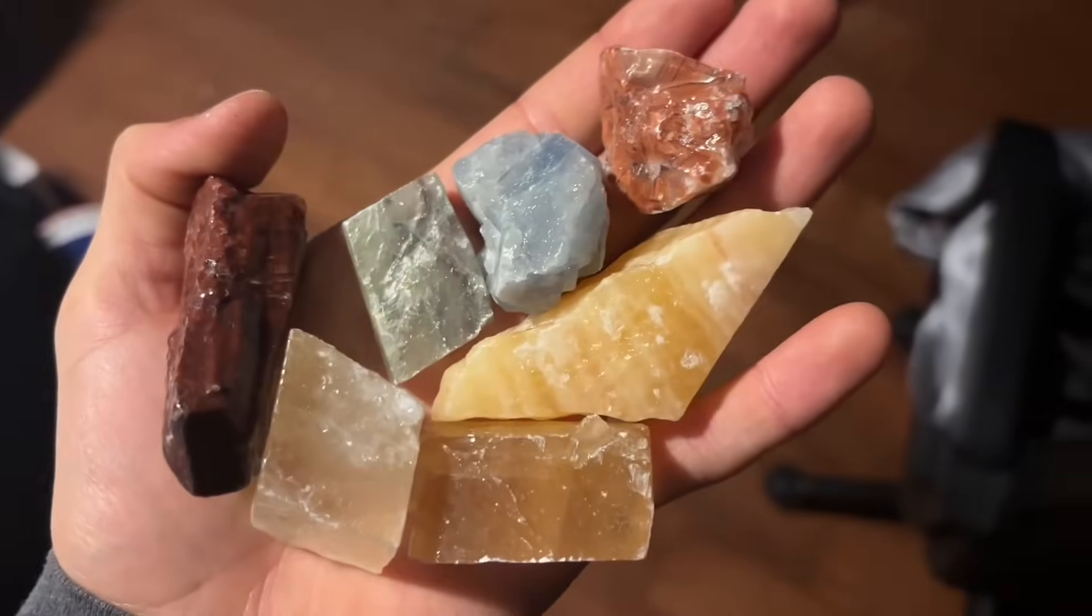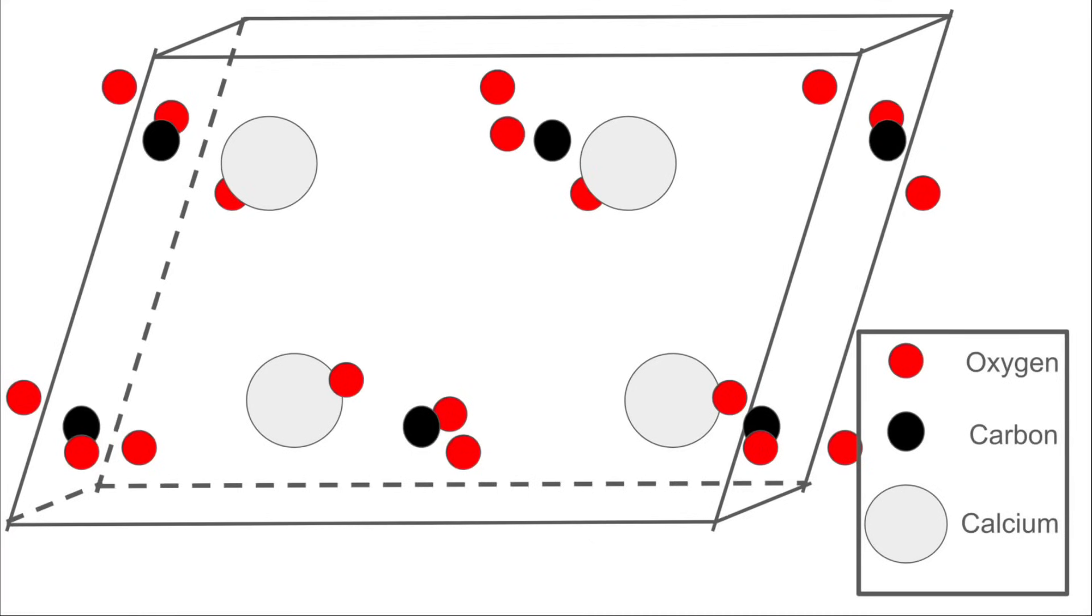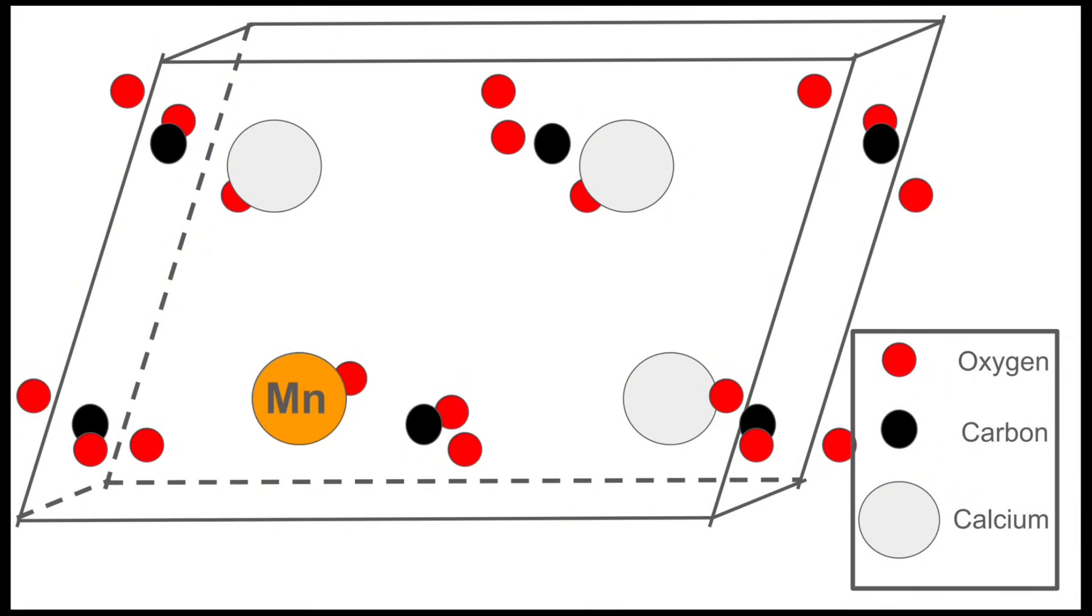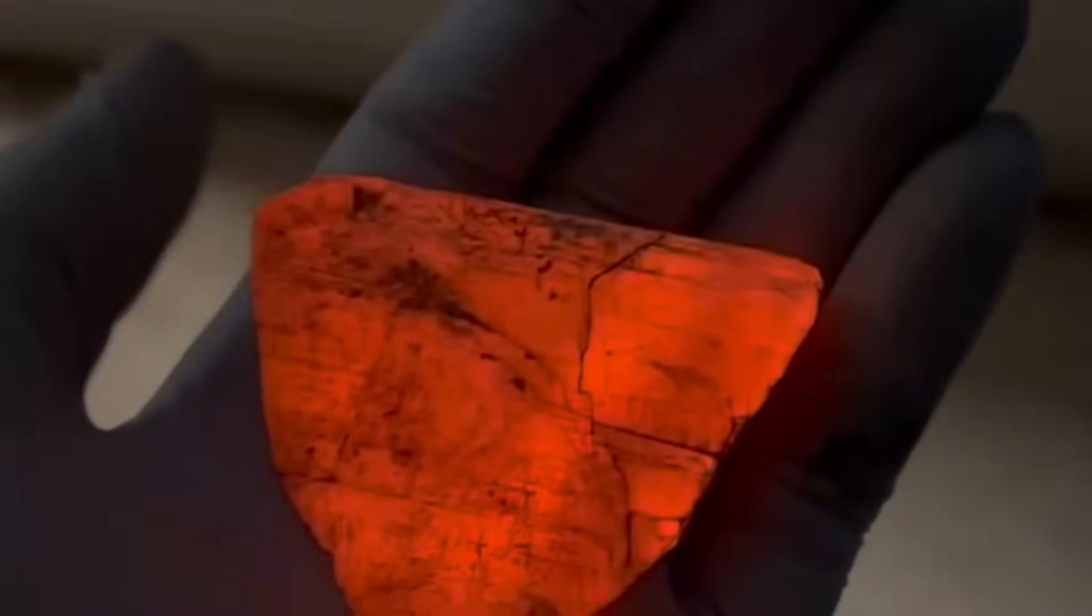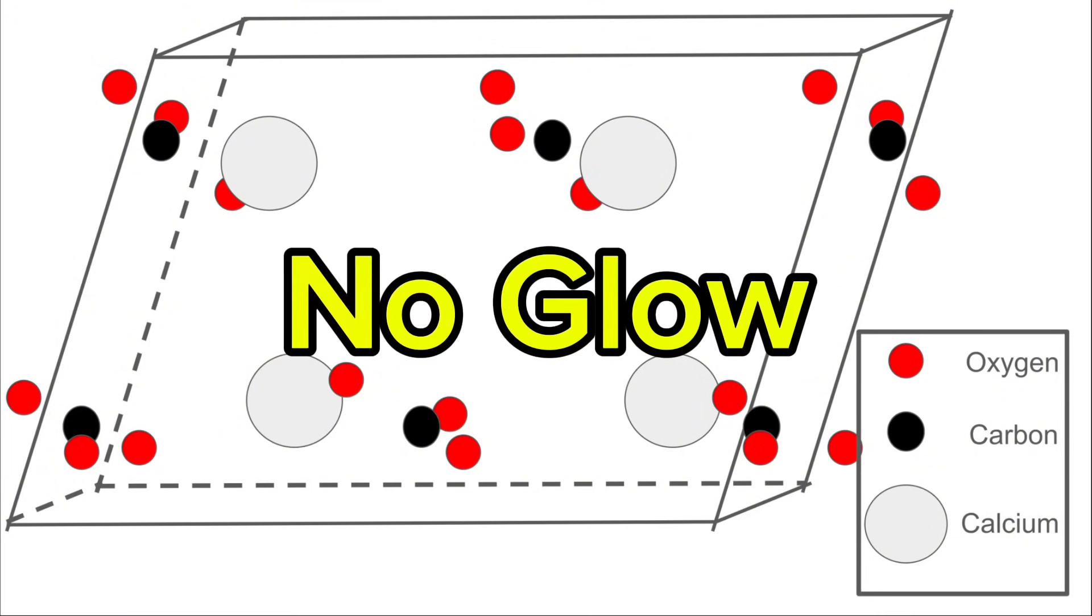Now, calcite can come in a lot of different flavors. But the variety we're using in this experiment has a special type of defect where calcium atoms are actually substituted by manganese atoms. So as you're traveling through the crystal structure, every now and then you'll find manganese instead of calcium. These manganese substitutions are integral for the glowing process to happen. If I just had pristine calcite with no defects or solid solution, I would not see a glow when I irradiated it.